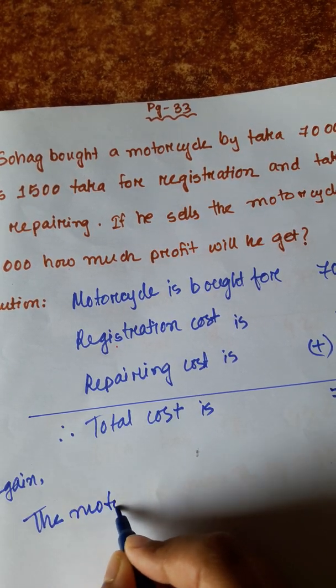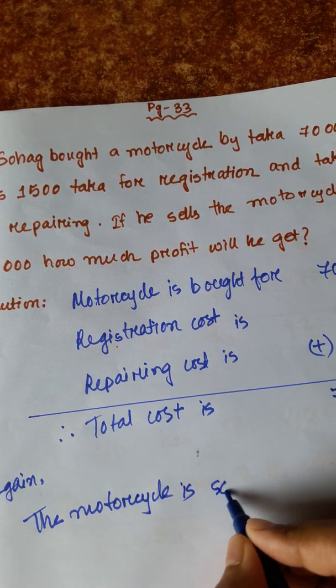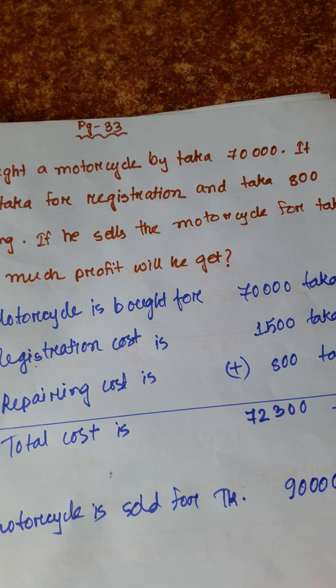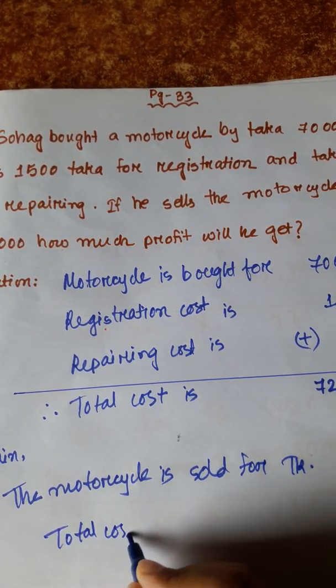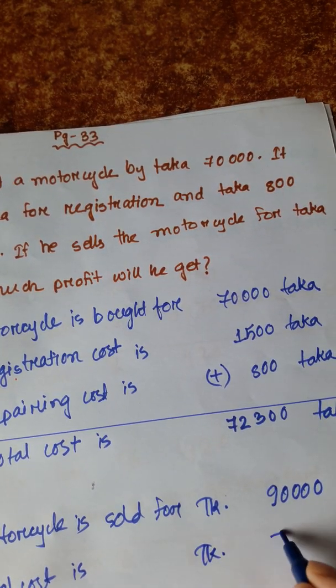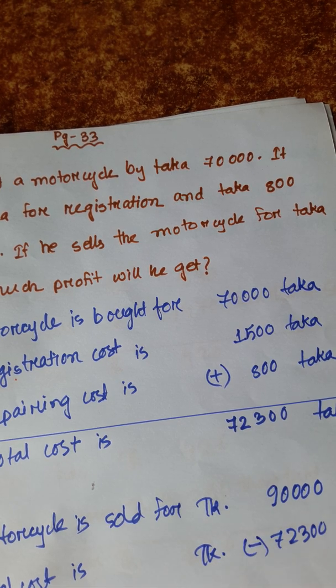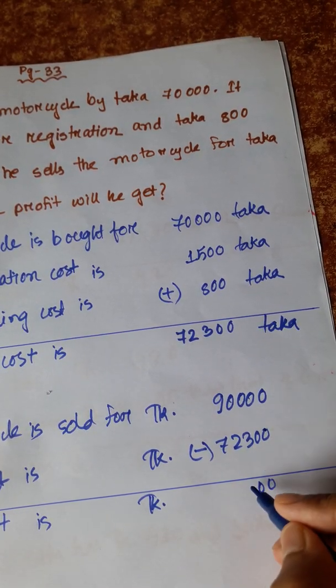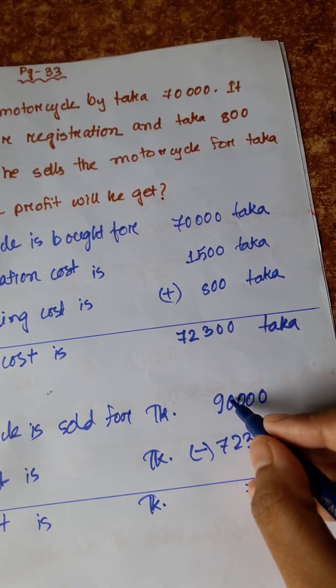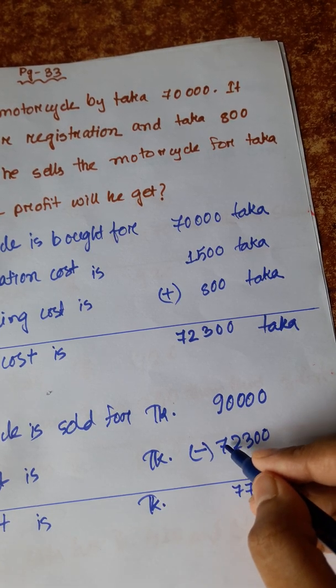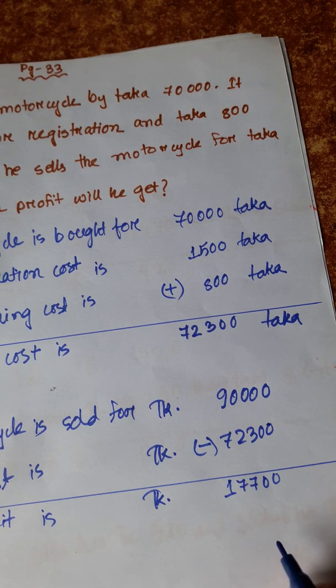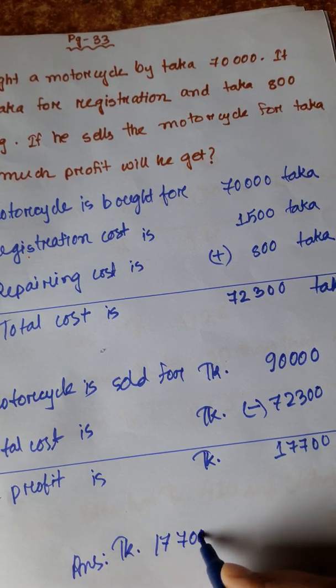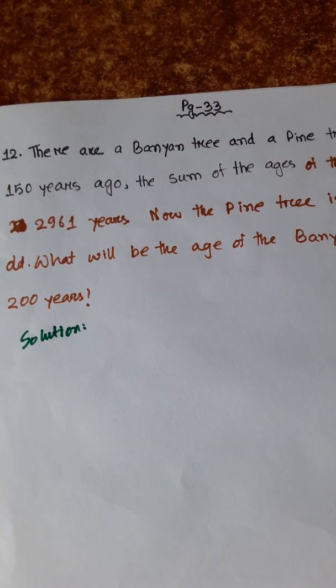The motorcycle is sold for taka 90,000. Total cost is taka 72,300. So the profit is: 0 minus 0 is 0, 0 minus 0 is 0, 0 minus 3 we need to borrow, so 10 minus 3 is 7, 9 minus 1 is 8 minus 2 is 6, 9 minus 7 is 2, so 1 minus 0 is 1. Profit is 17,700 taka.